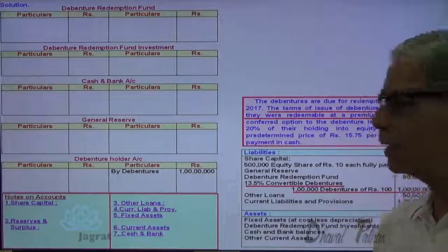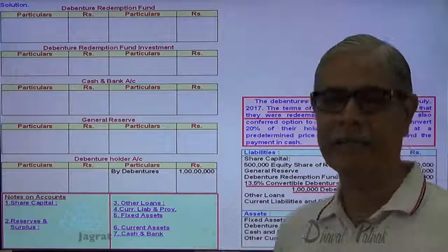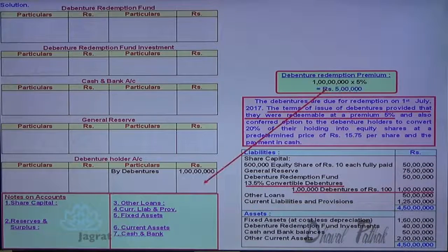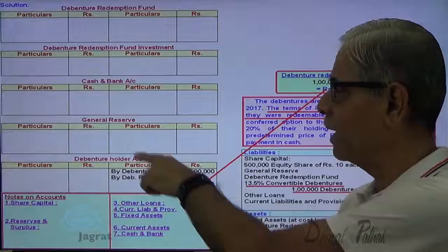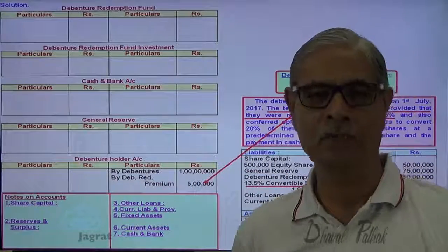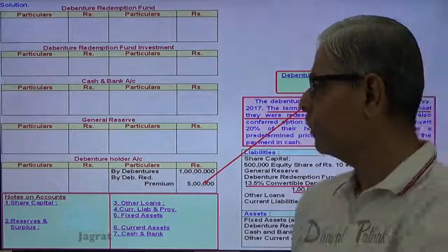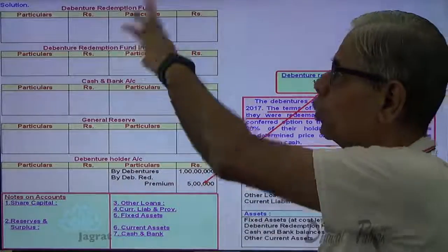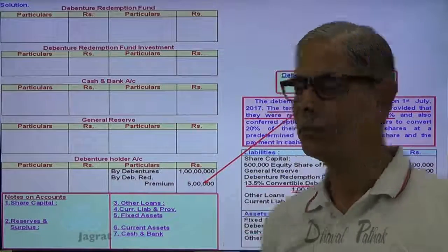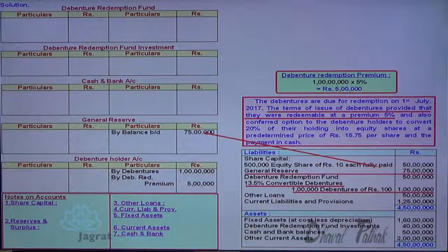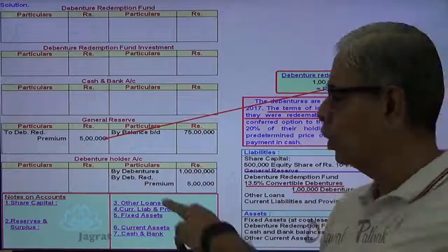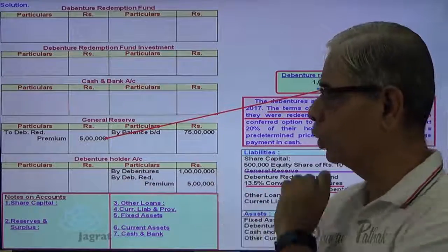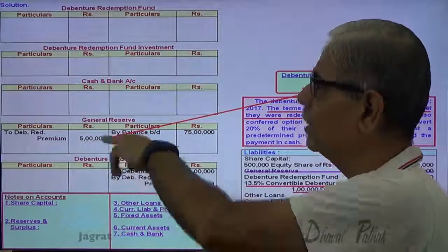They are paid a 5% redemption premium, so 5% redemption premium is credited to the debenture holders account as well. 100 lakhs × 5% = 5 lakhs. This debenture redemption premium is a loss on redemption and is required to be debited to general reserve or to the debenture redemption fund. I am going to debit it to general reserve. So general reserve balance of 75 lakhs is reduced by 5 lakhs, adjusted against the redemption premium.